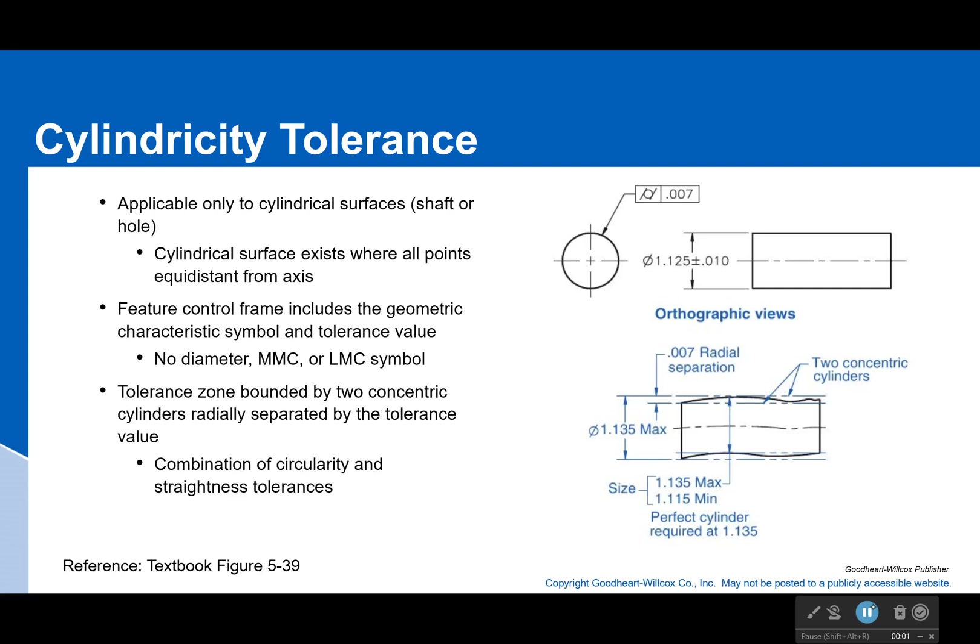Hi everyone, welcome back. So we're at our last form tolerance, which is the cylindricity tolerance. This only applies to cylindrical surfaces, which would be either a shaft or a hole, and it would constrain them within two concentric cylinders.